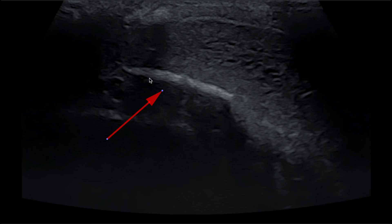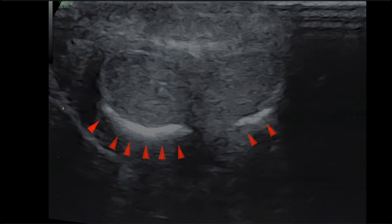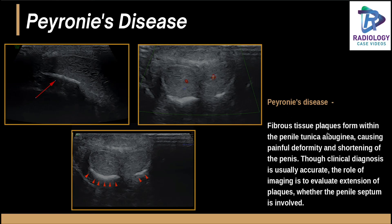Coming to another USG case: a large hyperechoic area representing a calcium plaque is seen. This is a penile Doppler study showing penile plaques of different sizes outlining the corpora. This is a classical case of Peyronie's disease — fibrous tissue plaques within the penile tunica albuginea causing painful deformity and shortening of the penis. Though clinical diagnosis is usually accurate, imaging can evaluate the extension of plaques and whether the penile septum is involved, which is important for treatment planning.